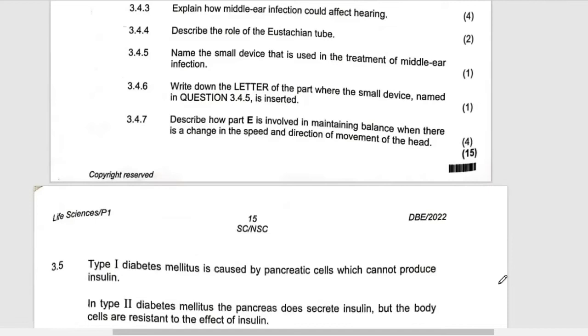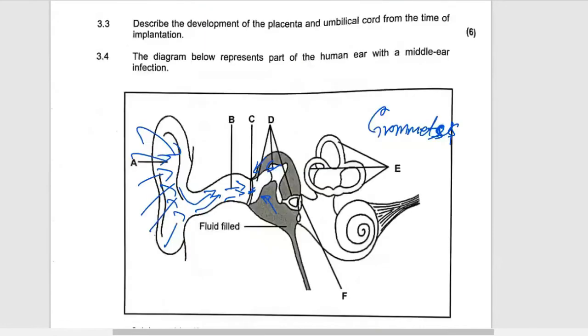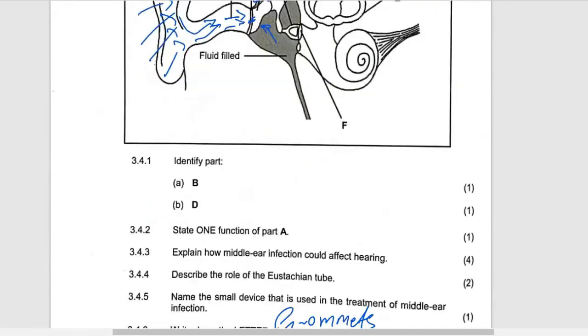Write the letter of the part where the small device named above, which is the grommet, is supposed to be inserted. It's supposed to be inserted in the tympanic membrane. And if you look at this, it is part C.